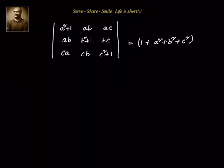We solved this problem earlier in another way and there are a couple of other ways. Today we try to explore a different option — how we can solve this particular problem. Our approach is: we see that a₁₁ is a² plus 1, a₂₁ is ab, a₃₁ is ca. If I can convert ab into b² and ca into c², and then do R1 = R1 + R2 + R3, I should be able to take the common factor out, since the answer should be 1 plus a² plus b² plus c².